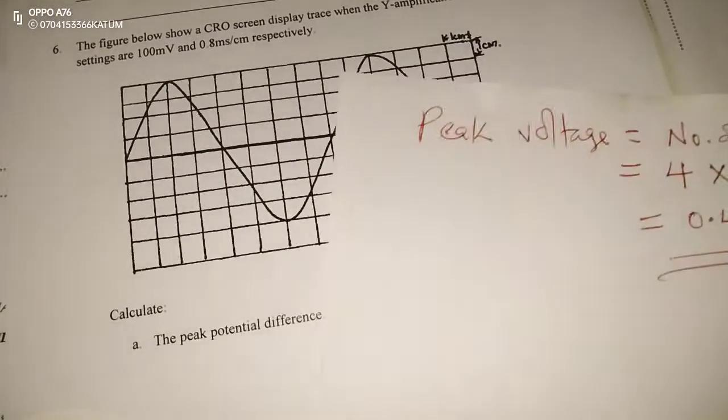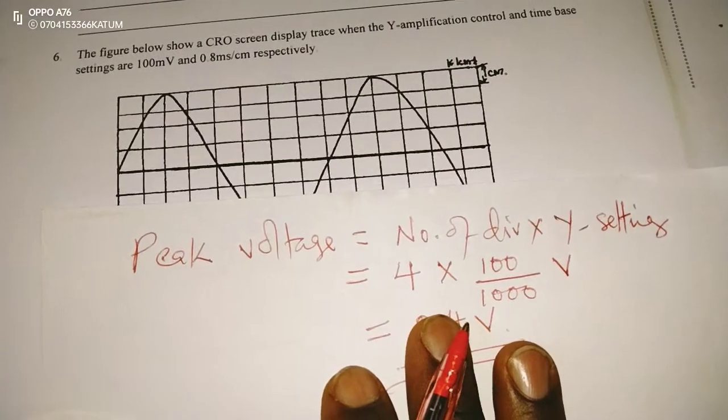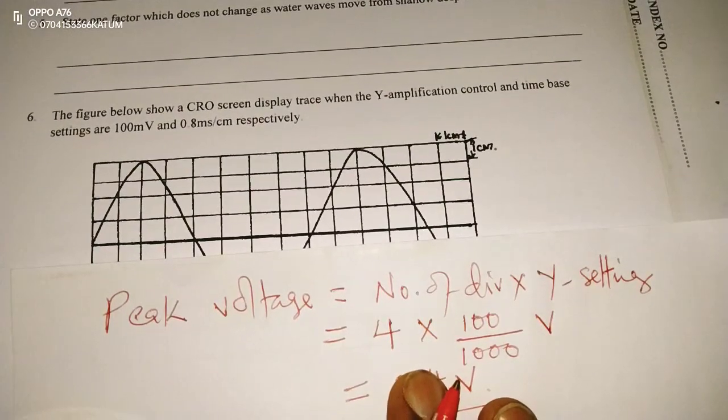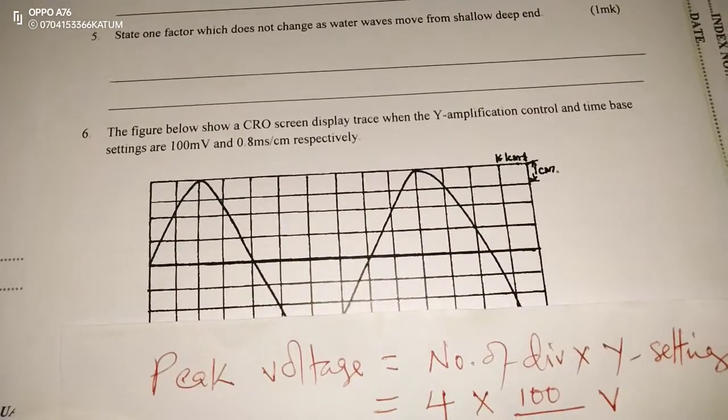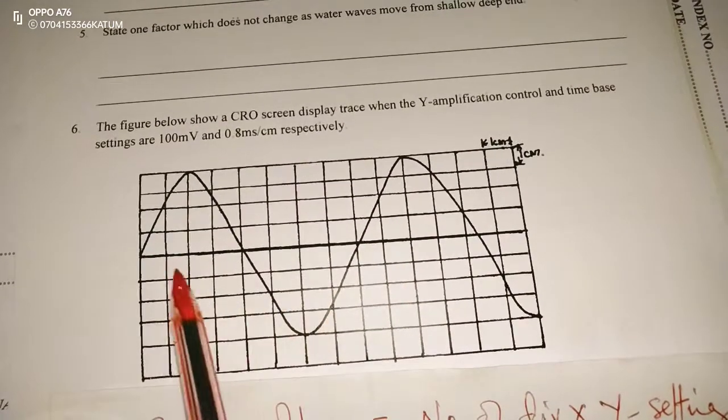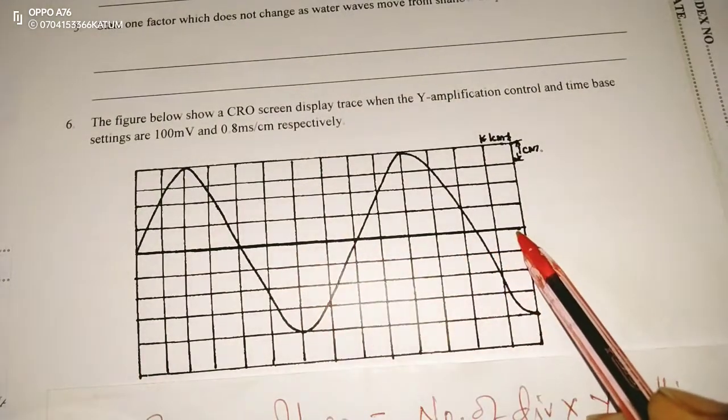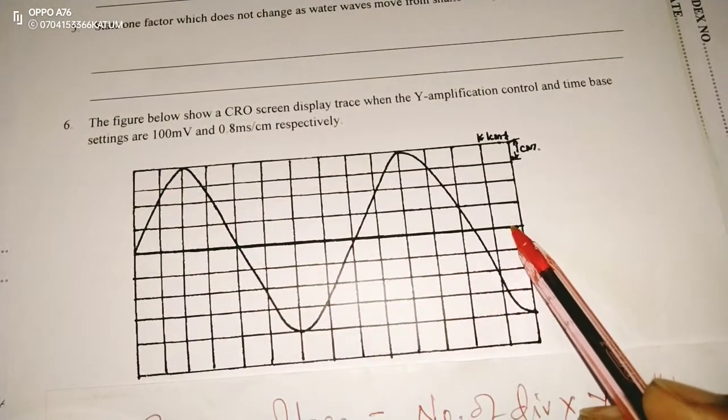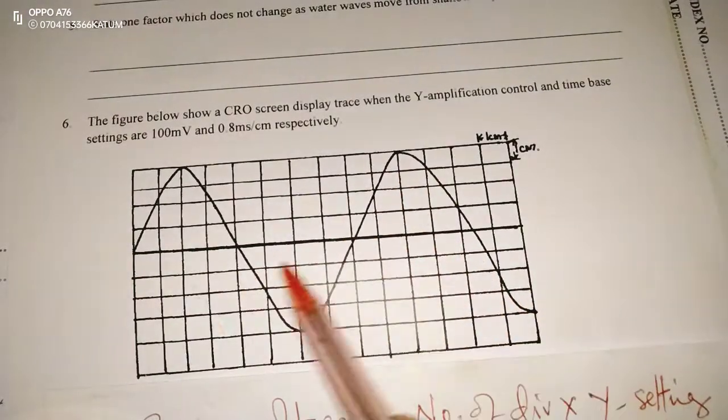Part B of the same question is telling us to determine the frequency of the signal. So for the frequency of the signal, we are going to consider the x-axis setting, or rather the time-based setting, which is 0.8 milliseconds per division, per every centimeter. And we are going to look at the number of divisions in our whole cycle. So in our whole cycle, because the time-based has a setting of 0.8 milliseconds...